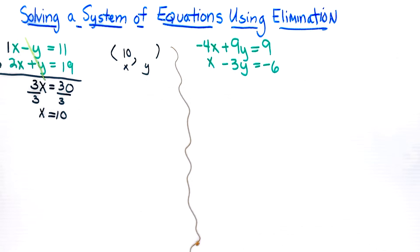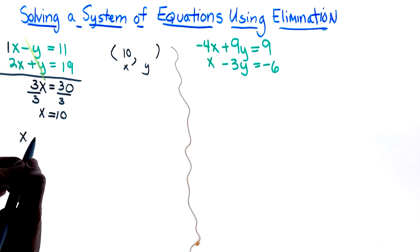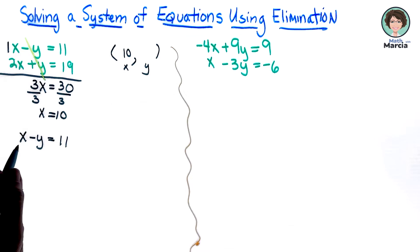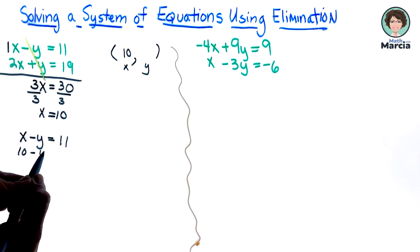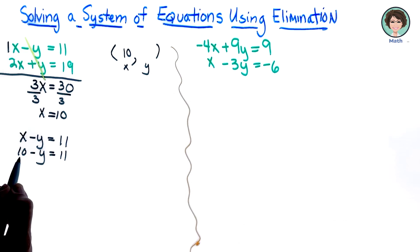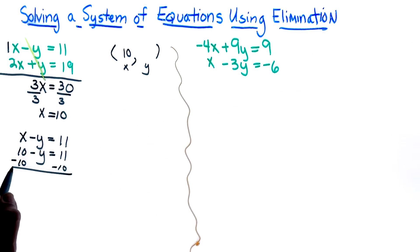Now I get to decide which equation I want to go back into and just substitute the 10, and it's the original equation. So I'm going to write x minus y equals 11. I picked the first one, you could pick the second one. I'm going to put in 10 minus y equals 11. Here's my substituting my x value. And of course I'm going to subtract 10 from both sides.